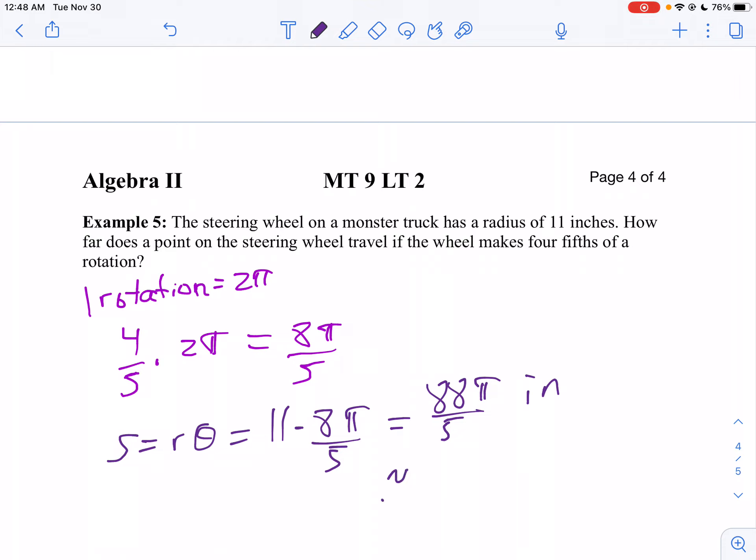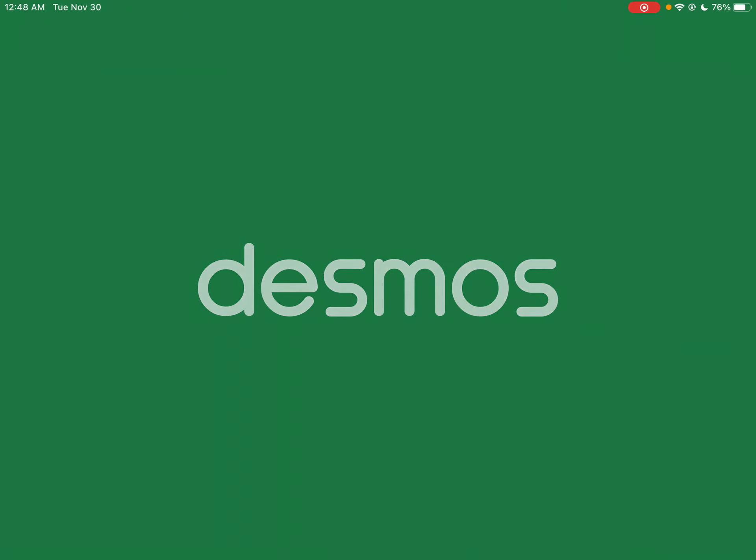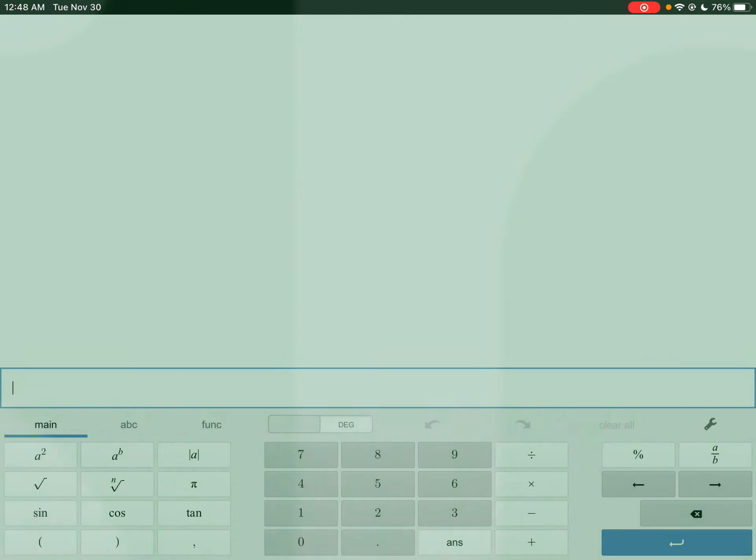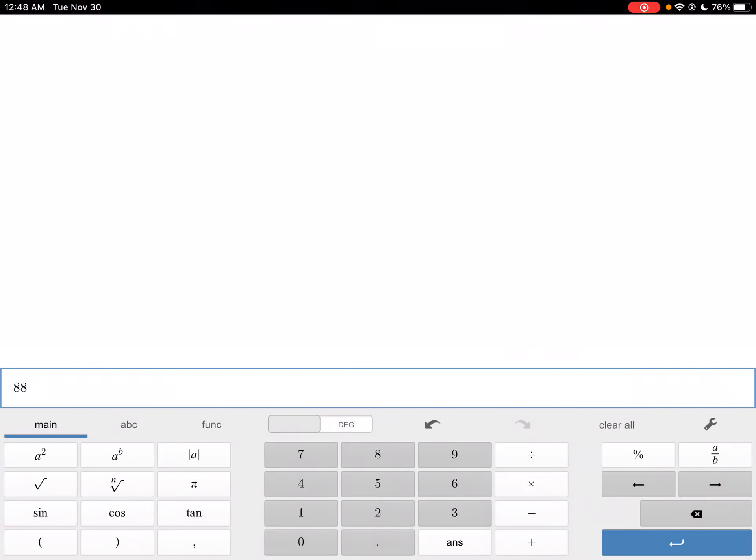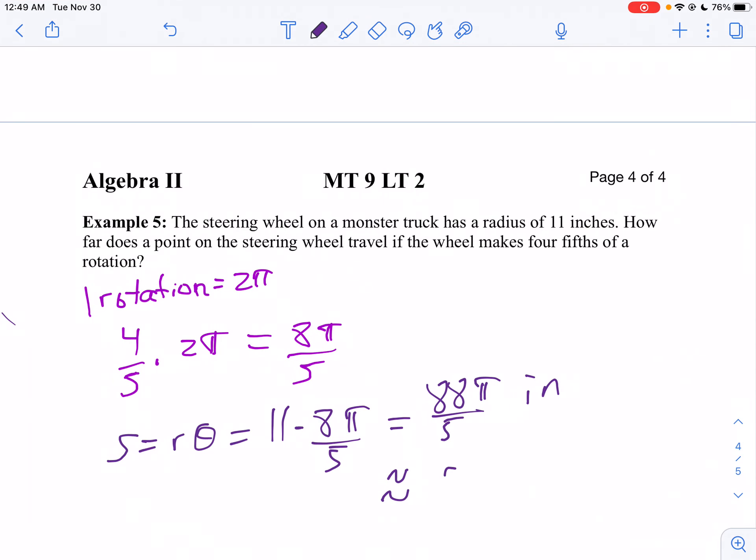And we're usually going to round that, because usually when I say how far does something turn, we don't usually say multiples of π, 88π over 5. So now let's use our calculator, and let's just take 88π divided by 5. So I go 88π, and I divide by 5, I get about 55 inches, maybe 55.3 inches. So 55.3 inches is how far that object turns.